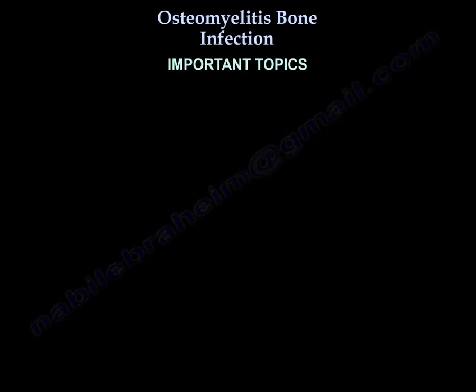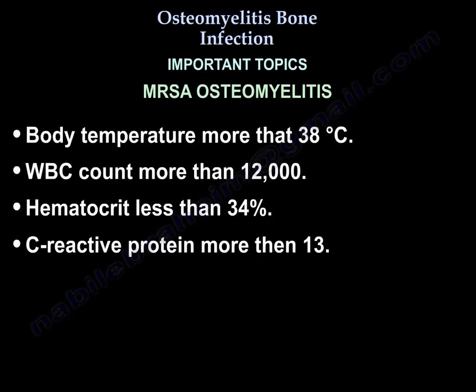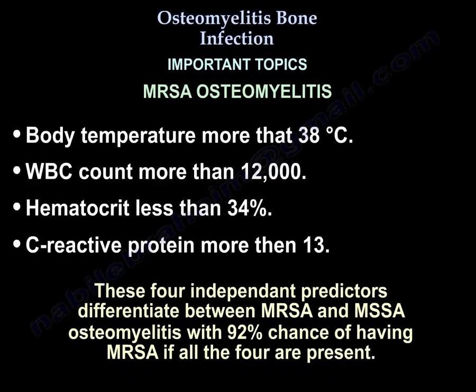For MRSA osteomyelitis, four independent predictors differentiate MRSA from non-MRSA osteomyelitis with 92% accuracy when all four are present: temperature more than 38°C, WBC count more than 12,000, hematocrit less than 34%, and C-reactive protein more than 13.